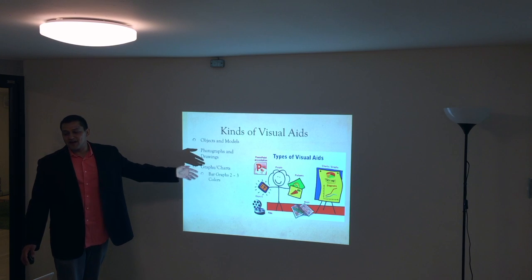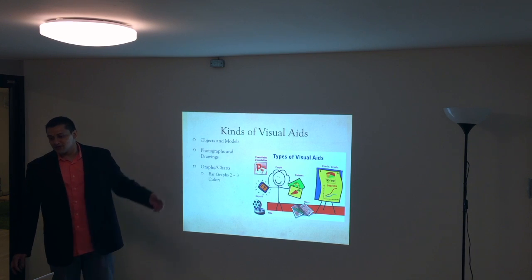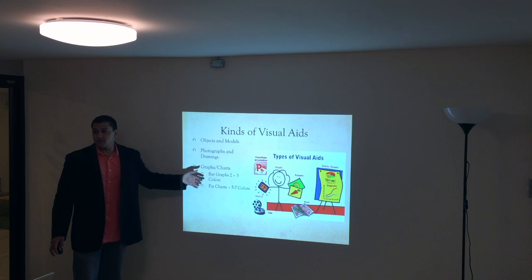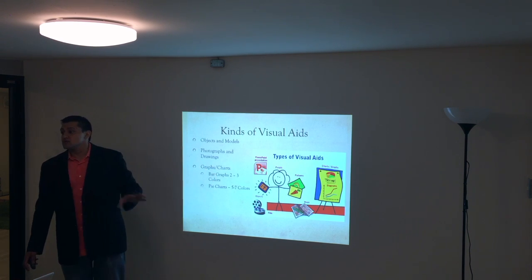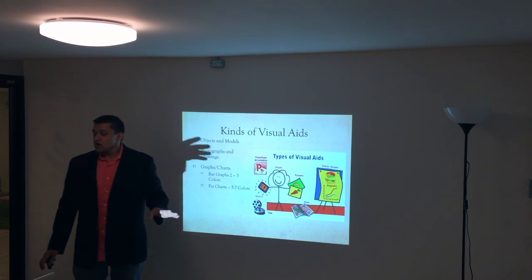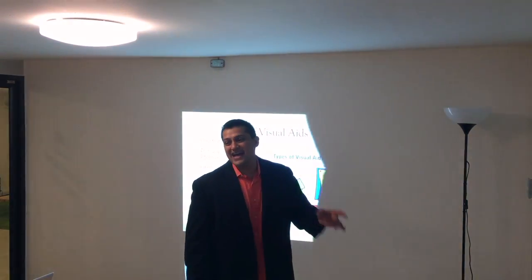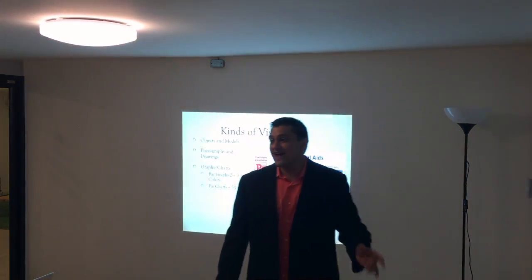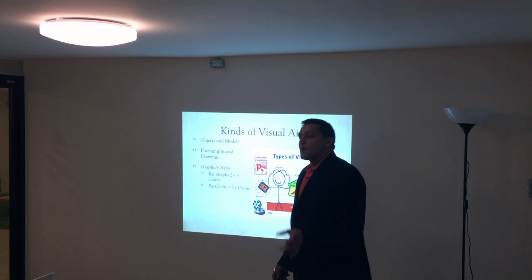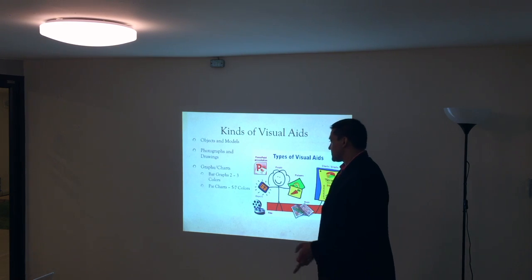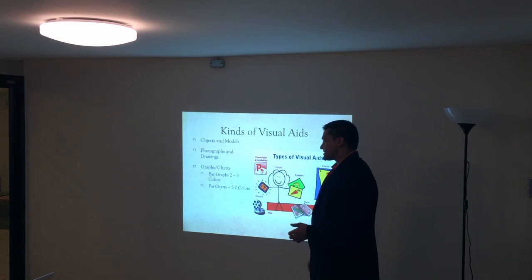Another way to do it is using graphs or bar charts. If you're going to use a graph or a pie chart, stick to two to three different colors. Your graph or pie chart can have as many different values as you want to represent, but make it visually appealing for the audience's eyes. I'll show you examples of that and what that means later on.